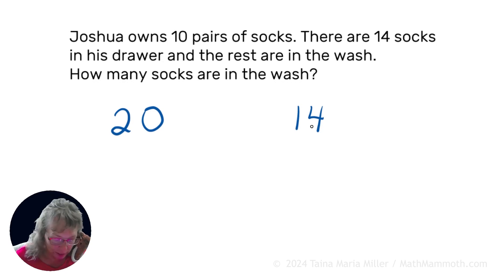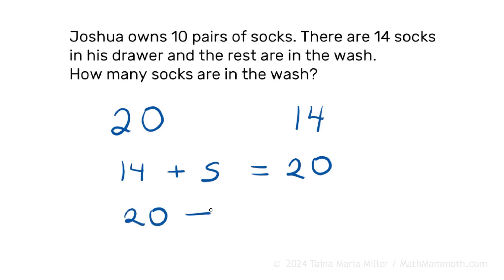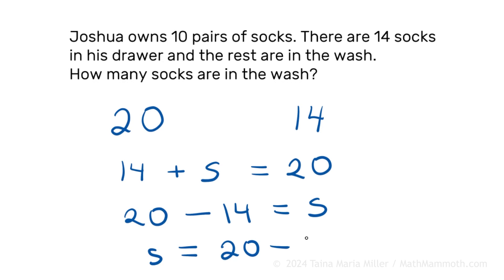And this is how I would write an equation for it — there are actually several ways. One way is that he has 14 socks and then he also has this unknown number of socks, and if you add those together you get the total of 20 — that's the total number of socks he has. Another way would be to use subtraction: we could write 20 minus 14 equals S. And a third way, just turning the previous one around, is S equals 20 minus 14.